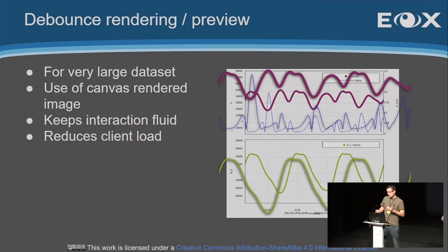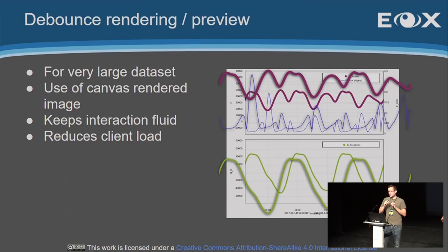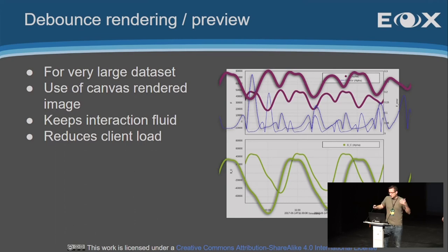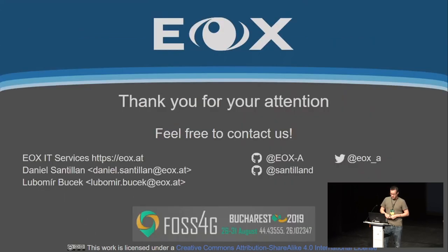Another neat feature we combined is debounce rendering. Instead of rendering for every manipulation you do, you introduce a debounce where you use a fixed image and manipulate — scale and transform — that image, and once the movement is done, the rendering is done again. These three things are combined to create a really strong and flexible scatter plot rendering library, which we think is quite nice and have used in many projects already.